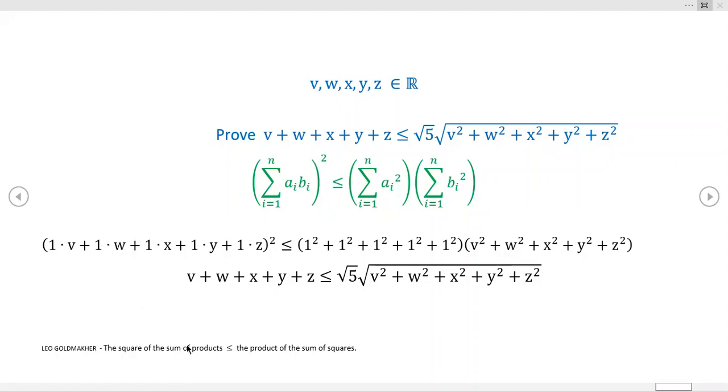So the square of the sum of the products is less than or equal to the product of the sum of the squares, which is the right-hand side. That does have a nice mnemonic linguistic ring, so I like that, and thanks to Leo for sharing.